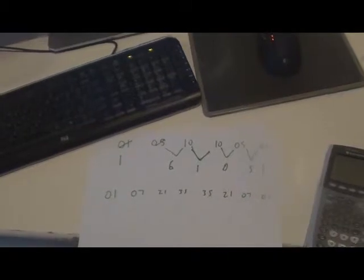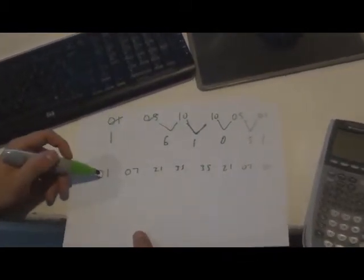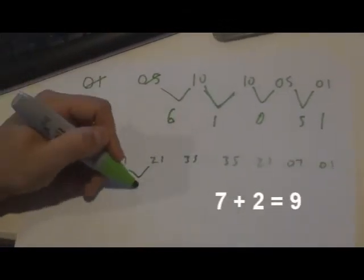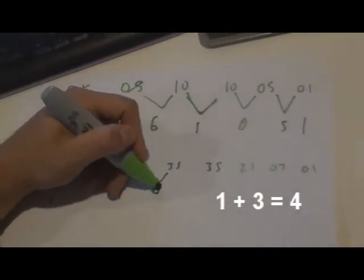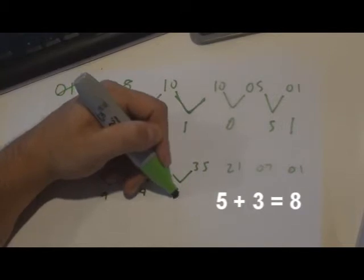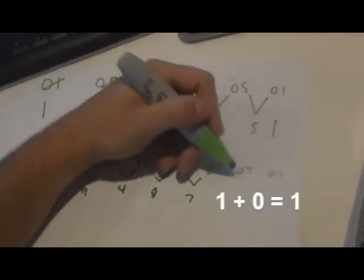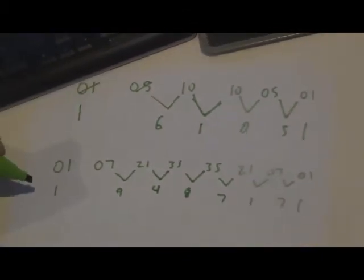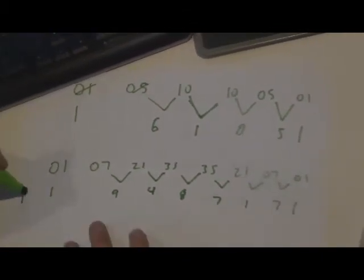This also works in the higher row numbers, such as the seventh row, which is what I have here. You have 1, 9, 4, 8, 7, 1, 7, 1. This is what 11 to the seventh comes out to be.